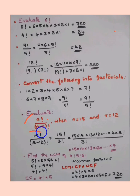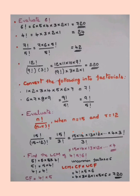Evaluate n!/(n−r)! when n = 15 and r = 12. Substituting: 15! / (15−12)! = 15! / 3!. Write 15! as 15 × 14 × 13 × 12 × ... × 3!, so that the 3! in numerator and denominator cancel. The result is 15 × 14 × 13 × 12 — for such large products you can stop here, as the full multiplication is lengthy and such large numbers are rarely asked.